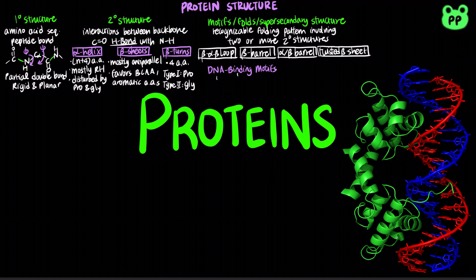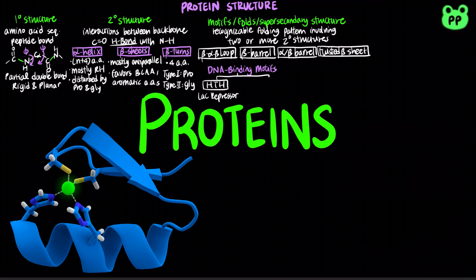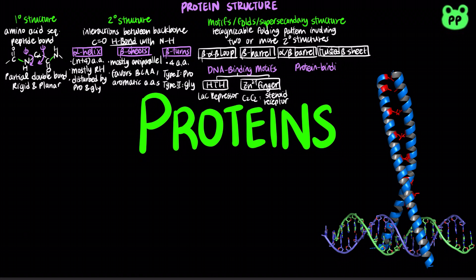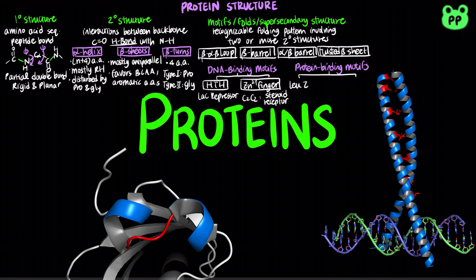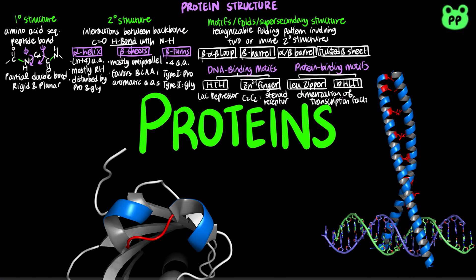Helix-turn-helix is a DNA binding motif found in the lac repressor. Zinc finger is another DNA binding motif, which contains multiple finger-like protrusions stabilized by one or more zinc ions. The cysteine-2-cysteine-2-like fold group is found in steroid receptors. Leucine zipper and basic helix-loop-helix are protein binding motifs that function in dimerization of transcription factors.